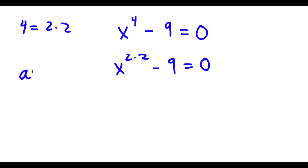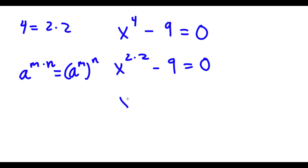If I have something in the form a to the power of m times n, this is the same thing as a to the power of m to the power of n. So x to the power of 2 times 2 I can rewrite as x to the power of 2 to the power of 2. And 9 I can rewrite as 3 squared.